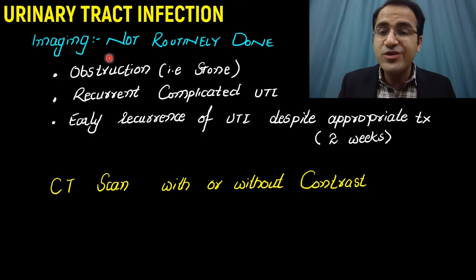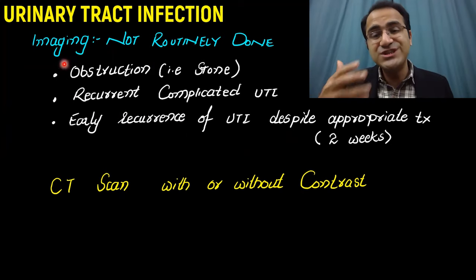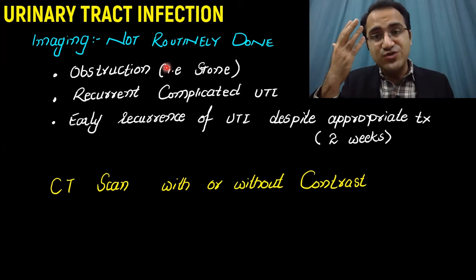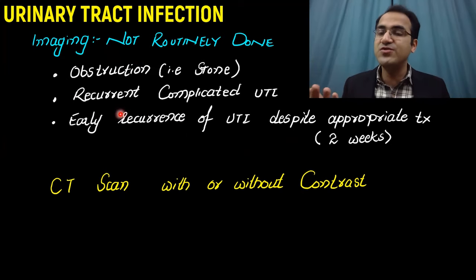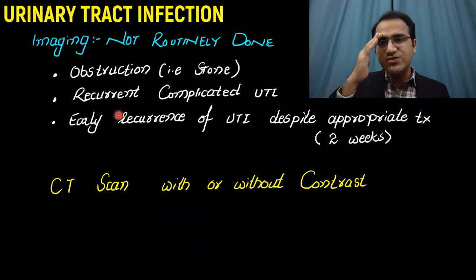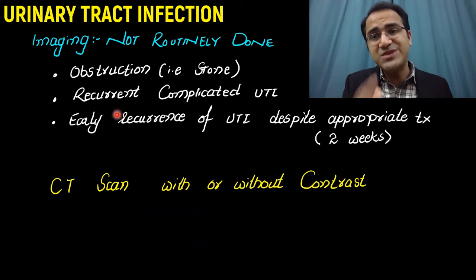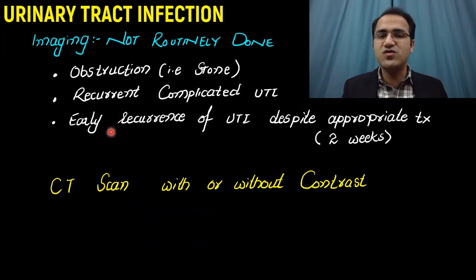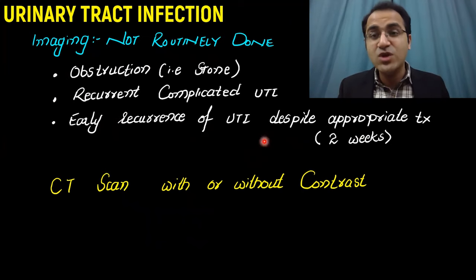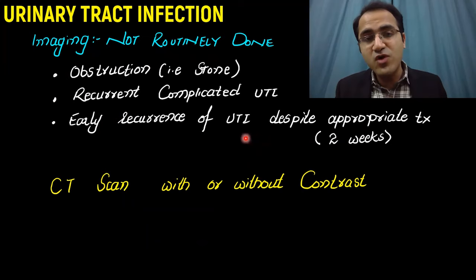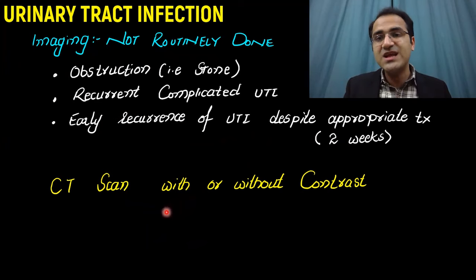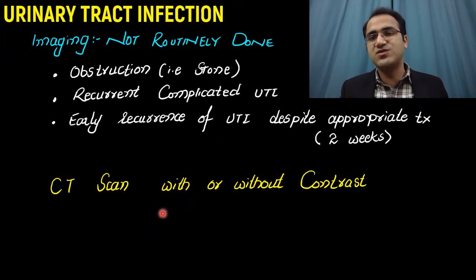Imaging is not routinely done for UTI diagnosis. It is only done when you suspect obstruction such as due to stones, when the patient has recurrent complicated UTI not responding to treatment and you suspect an anatomic defect, or with early recurrence despite appropriate treatment. CT scan with or without contrast is used for imaging. If the patient is pregnant, ultrasound is done instead.